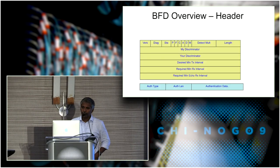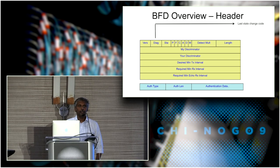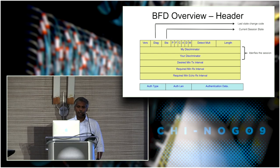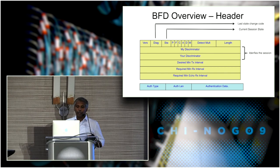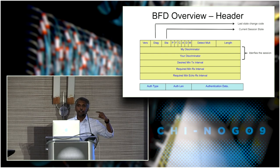This is the header format of the BFD control packet. The diag code carries the last state change code — a kind of error message helpful to identify the reason for the state change. The state field is the actual state of the BFD session — whether it's in init, up, or admin down state. We also have my discriminator and your discriminator — a 32-bit value. My discriminator is my local discriminator; your discriminator is the remote discriminator of the target node. A combination of both is used to identify any BFD session.